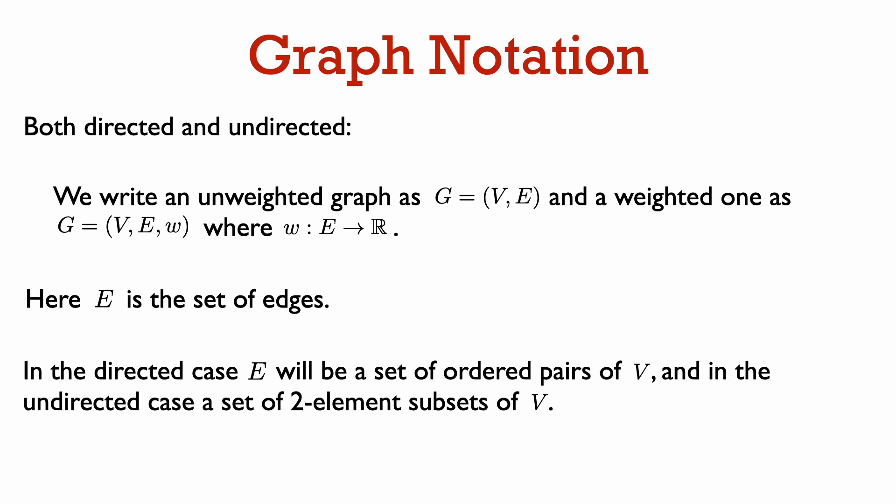Finally, for both undirected and directed graphs, when the graph is unweighted we represent it simply as a pair (V, E), where V denotes the set of vertices and E is the set of edges. When the graph is weighted, we additionally specify a weight function w, which is a mapping from the edges to the real numbers, where w of an edge gives the weight of that edge. With this notation out of the way, we will move on to talk about how we can actually represent a graph in a data structure.